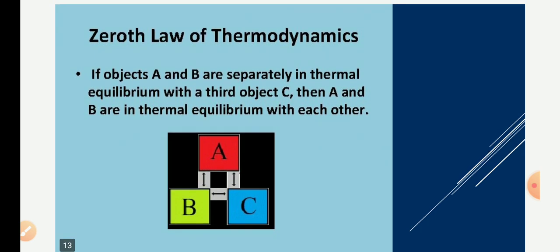Zeroth law of thermodynamics: From the figure, we have three objects A, B, and C. Objects A and B are separately and independently in thermal equilibrium with the third system C — A is in thermal equilibrium with C, and B is separately in thermal equilibrium with C. Therefore, A and B are also in thermal equilibrium with each other, even though there is no direct contact between them. This is the zeroth law of thermodynamics, from which we define temperature.